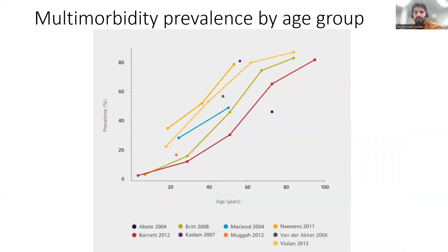Another graph has been taken from a systematic review of 39 observational studies across 12 high-income countries. This illustrates a well-established positive association between age and the prevalence of multimorbidity. This association is commonly seen despite differences in the definition of multimorbidity between the included studies.